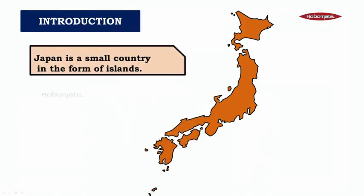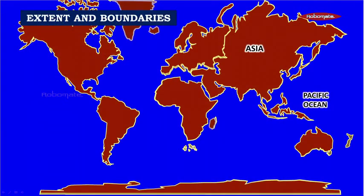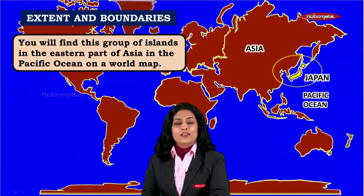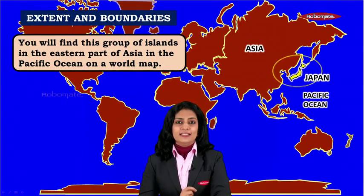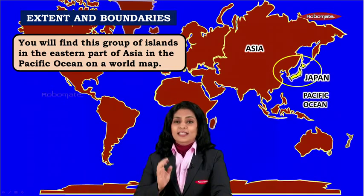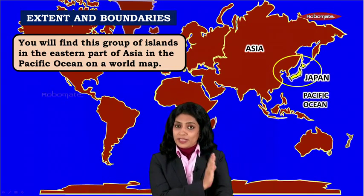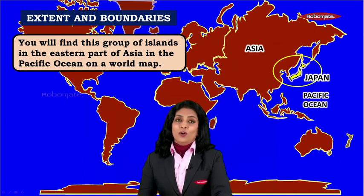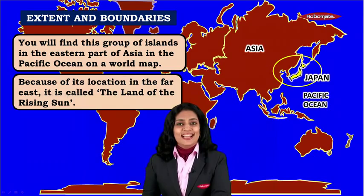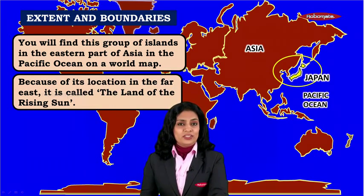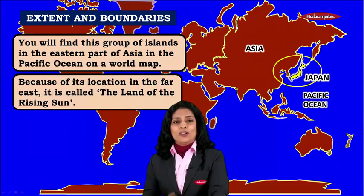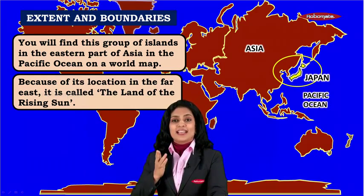Japan is a small country in the form of islands. This group of islands is located in the eastern part of Asia, in the Pacific Ocean, as you can see on a world map. Because of its location in the far east, it is called the land of the rising sun.